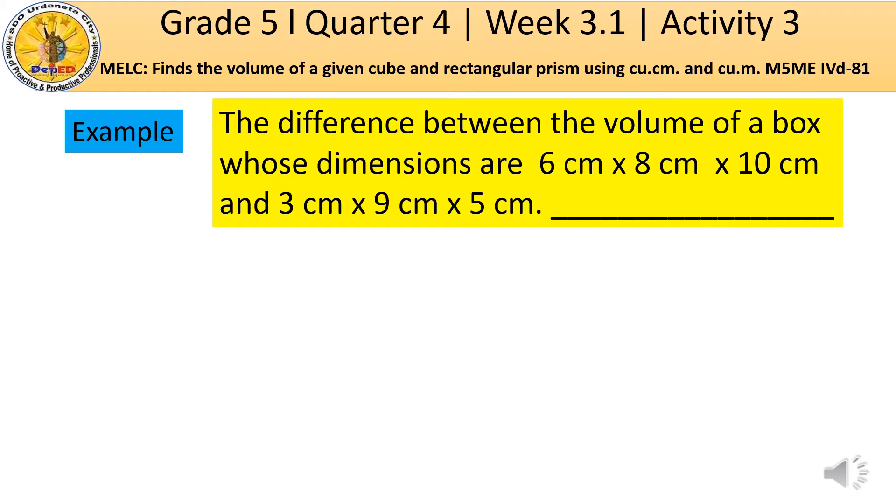Let's do the first given in the problem. The formula to be used is volume of a rectangular prism which is volume equals length × width × height. Now, the length which is 6 cm will be multiplied first to the width which is 8 cm and the product is 48 cm².